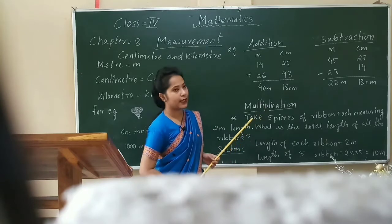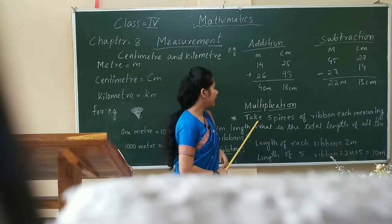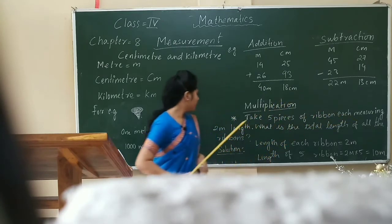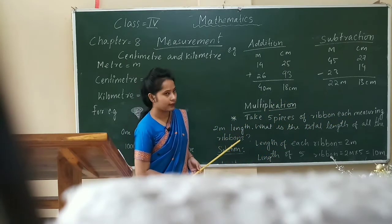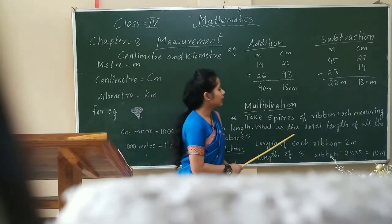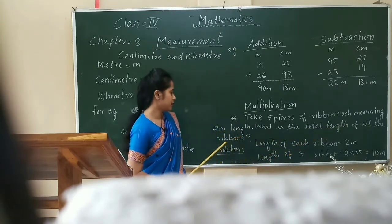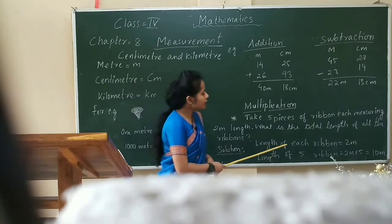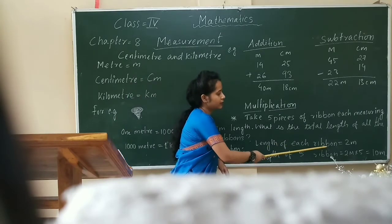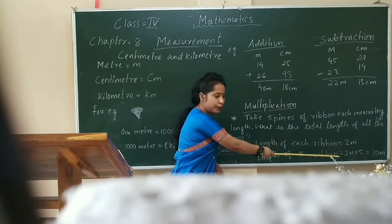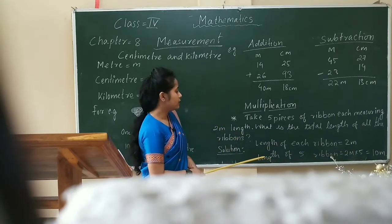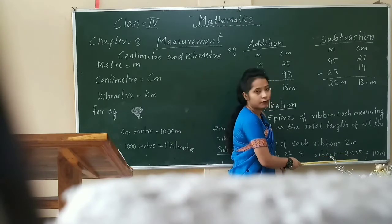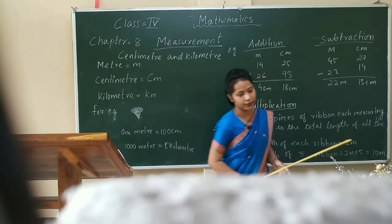Now, multiplication. Take 5 pieces of ribbon, each measuring 2 meters in length. What is the total length of the ribbon? Here is the solution: length of each ribbon equals 2 meters. So, length of 5 ribbons equals 2 meters multiplied by 5, that is 10 meters.